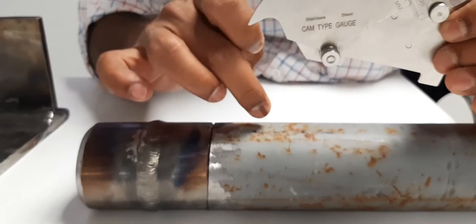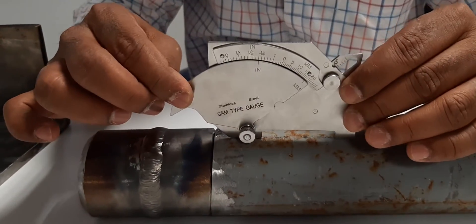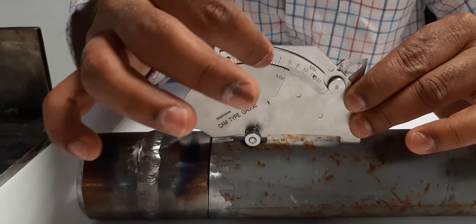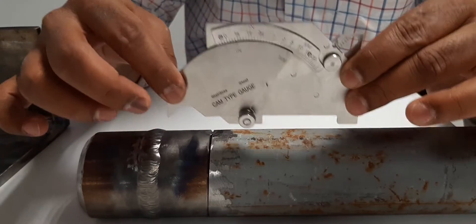Misalignment between component one and component two, you can measure here like this. There is a scale reading.